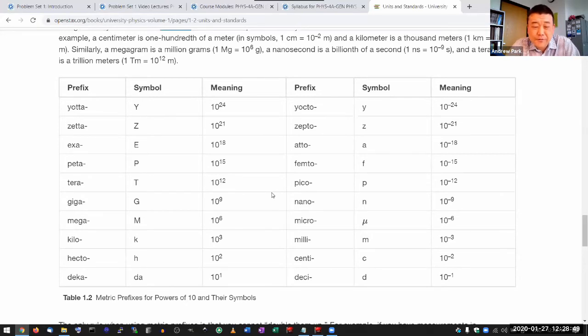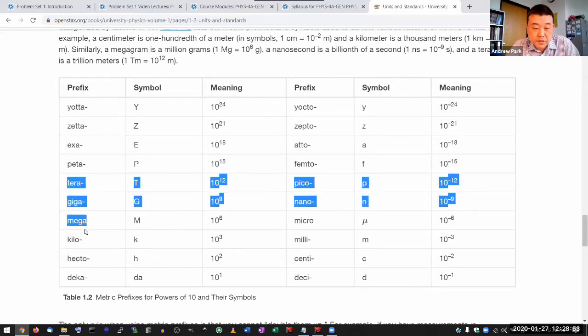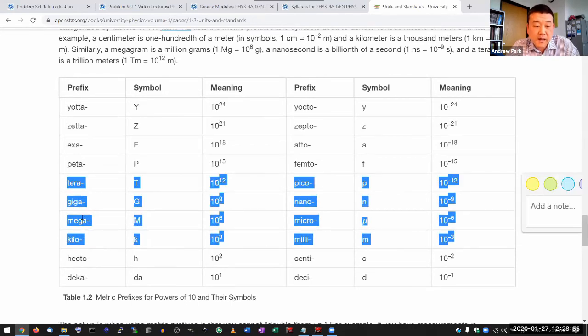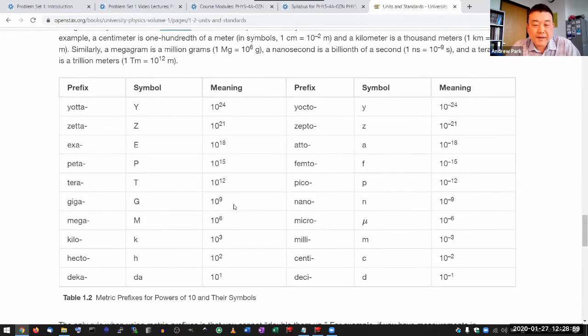And you don't actually have to have all of them memorized. But it's good to know up to maybe this much: tera, giga, mega, kilo. It's good to know what those are. It's good to know what the smaller ones are: centi, milli, micro, nano, pico. Femto is probably getting to be a little bit too small. So it's good to know what all those are. I have them memorized, so I'm just going to use my memorized knowledge.